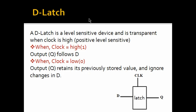So what is a D latch? A D latch is a level sensitive device, which means that the output Q is dependent on the level of the clock and is transparent when the clock is high. This is for positive level sensitive. A negative level sensitive latch is transparent when the clock is low. For a positive level sensitive latch, when the clock is high, the output follows D, and when the clock is low, it retains its previously stored value and ignores any changes in D.